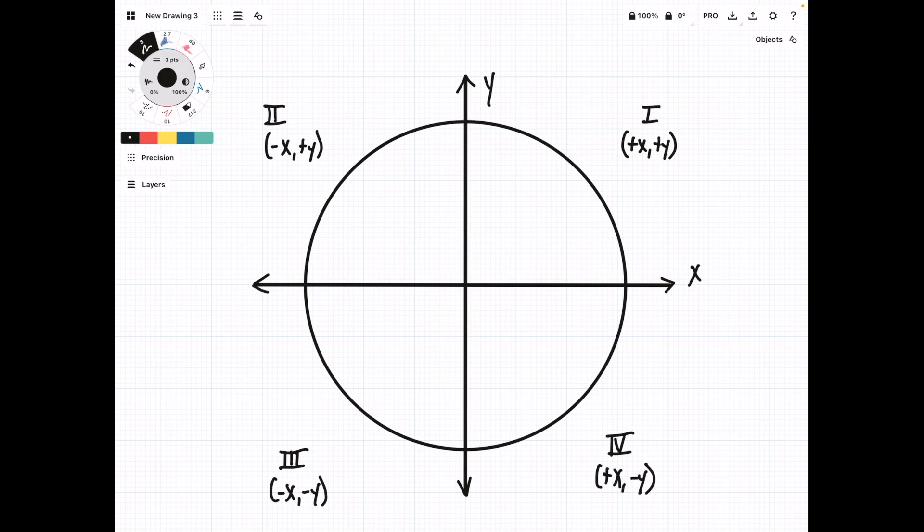The reason this is important is that if we draw a unit circle on this coordinate plane and then extend a line from the center, the point where that line meets the circle, that x-y coordinate, is equal to cosine theta comma sine theta.